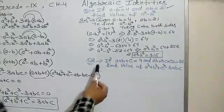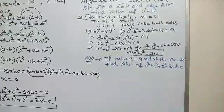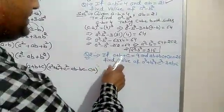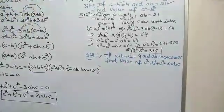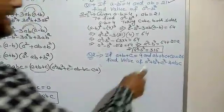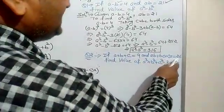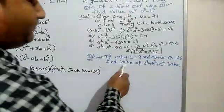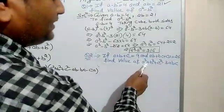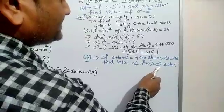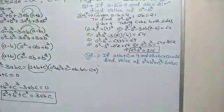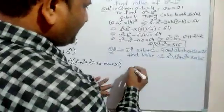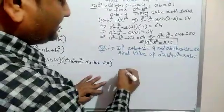Let us solve another question. If a plus b plus c equals 9, and ab plus bc plus ca equals 26, we have to find the value of a cube plus b cube plus c cube minus 3abc. This is based on an identity.